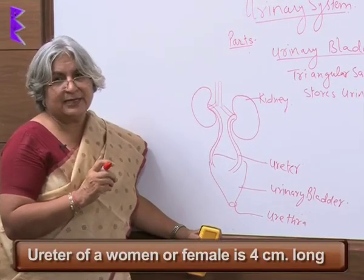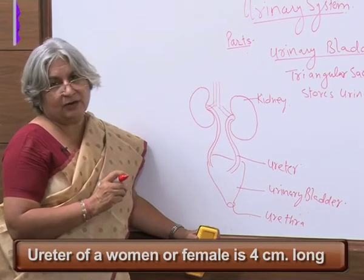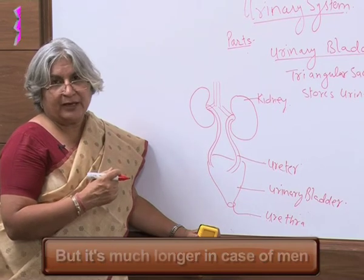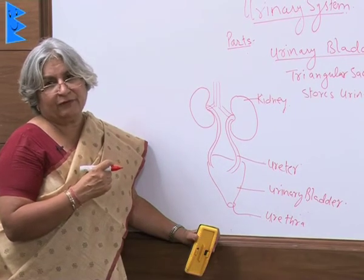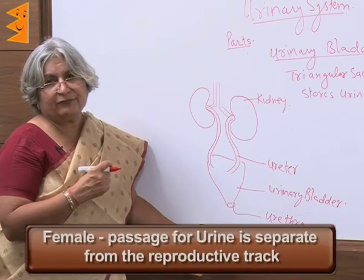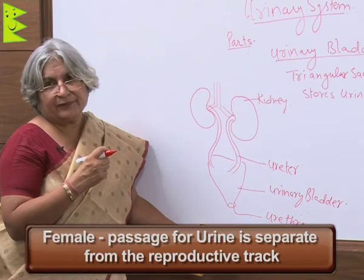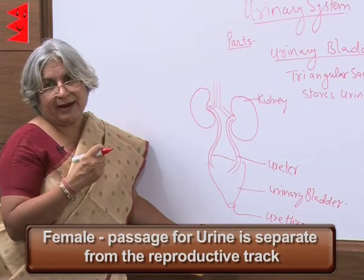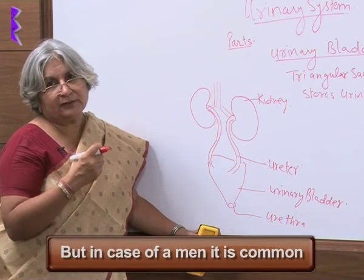In the case of females, the urethra is only 4 cm long, but it is much longer in the case of men. Another important difference is that in females, the passage for urine is separate from that of the reproductive tract.